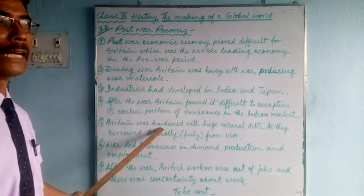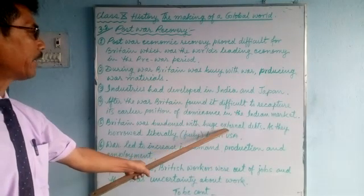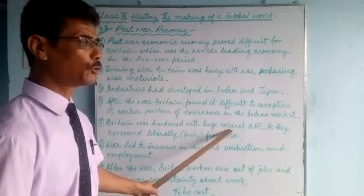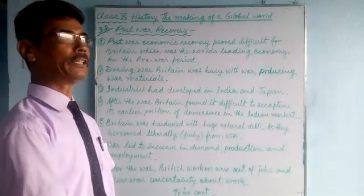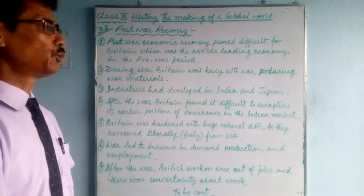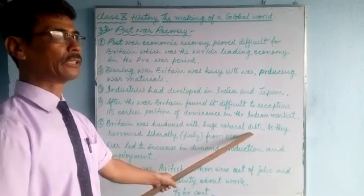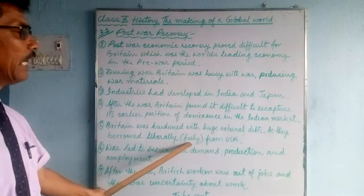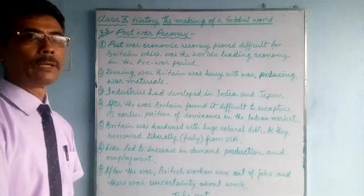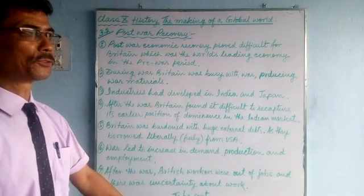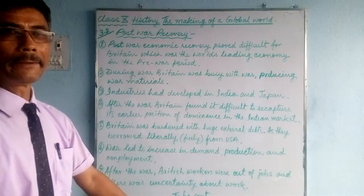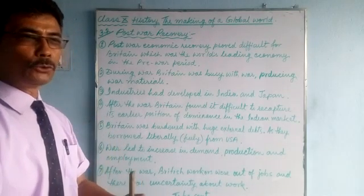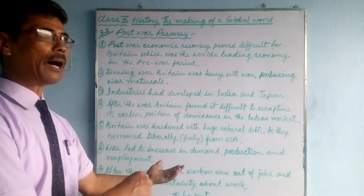Not only in India but all over the world, Britain was burdened with huge external debts. External means from outside — they had borrowed money, materials, and weapons from the USA. As they borrowed liberally from America during the war, after the war they had to repay, so they were overburdened with external debts while also having lost their markets.